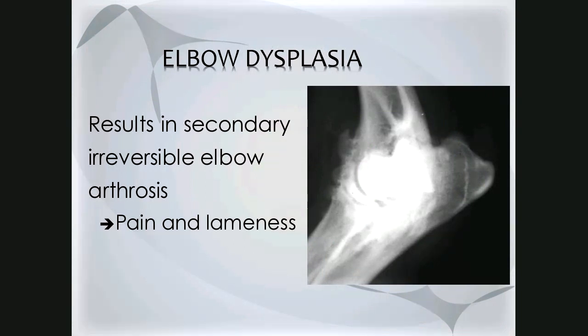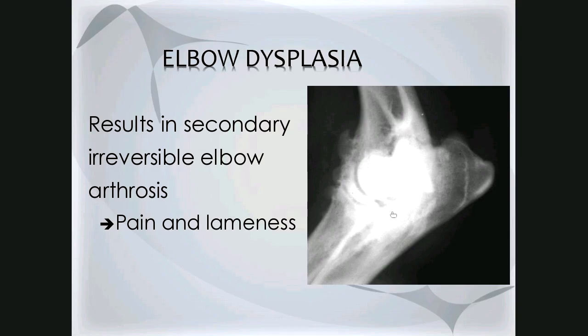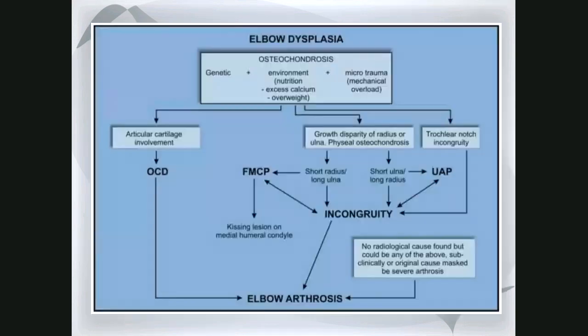The end result of any of these four causes is elbow arthrosis, which leads to pain and lameness. Looking at a medial lateral view of an elbow, there is a lot of new periarticular bone consistent with osteophytic new bone around the joint, indicating quite severe arthrosis. The pathogenesis is attributed to osteochondrosis, which has several components including an important genetic component — hence why one needs to screen dogs before breeding, though this is complex and not very well understood.